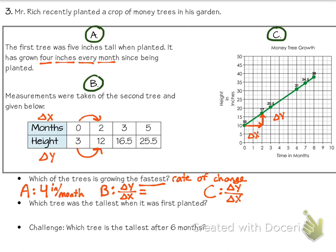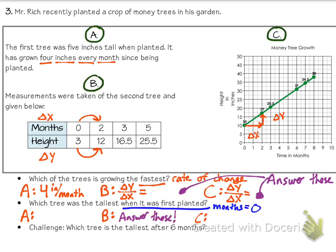Delta Y over delta X. Go ahead and answer those two rates of change, one from the table and one from the graph. All right, now that you have those answered, let's answer which tree was the tallest when it was first planted. That is when months equals zero. For A, you're just going to have to read it because it says how tall it was. But for B and C, you're going to have to figure out when is X equal to zero. And I want you to answer those three all below right there.